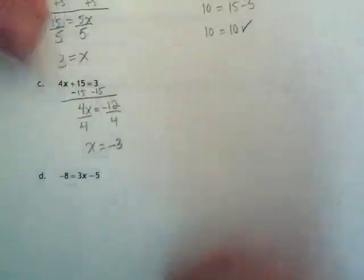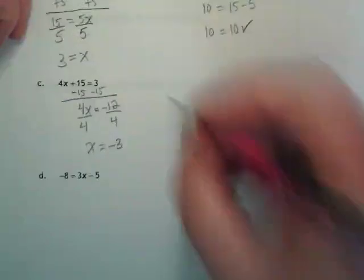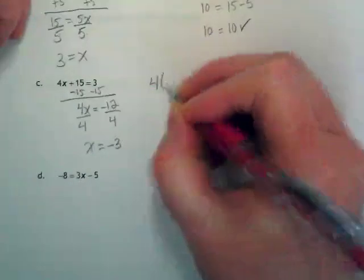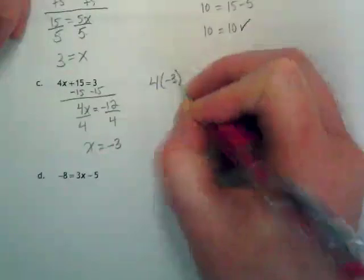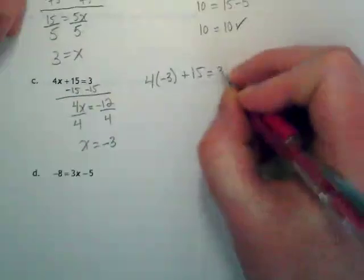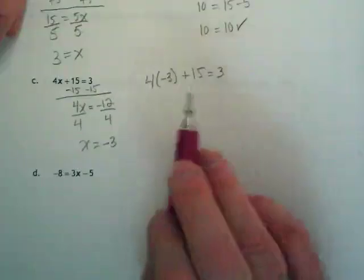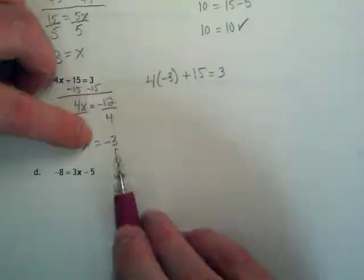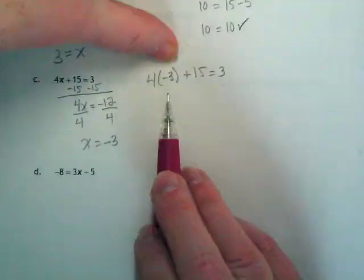I'm going to go through this pretty quick because we're getting close to the end of class and I just want to show it real quick. To check this, I want to see if I can get both sides of this to equal 3 by taking this negative 3 and putting it in our equation where the X was.